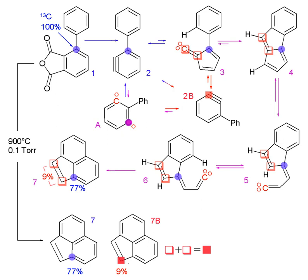See also: Isotopic signature. A radiogenic isotope tracer involves an isotope produced by radioactive decay, which is usually in a ratio with a non-radiogenic isotope whose abundance in the earth does not vary due to radioactive decay.